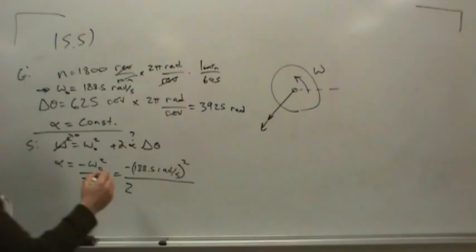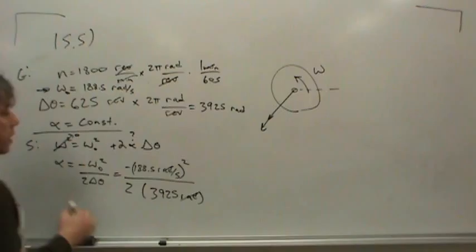So 625 times 2π, what do you get? 3,925 radians. Okay, that sounds reasonable. So 3,925 radians. You see the radians are going to go away. Well, you could say you have radians per second squared. It doesn't matter. So take this ratio, 188.5 squared, divided by 2, divided by 3925. What do you get?